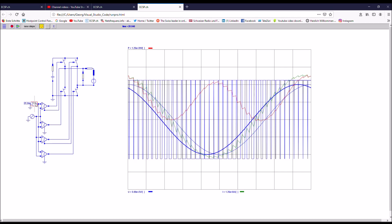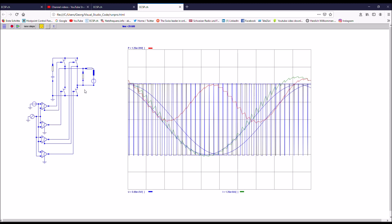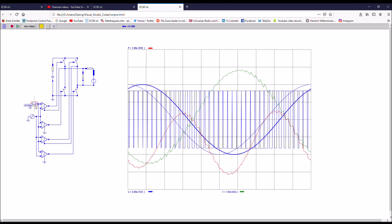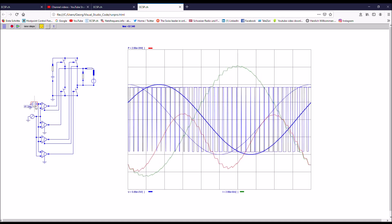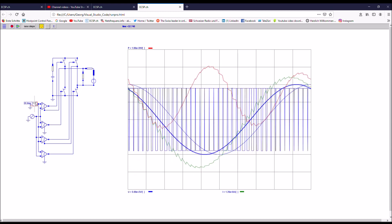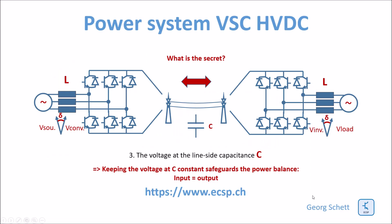The key part of the secret is the phase angle between the AC source and the converter output curve — this controls the power. You can see power is either on the negative side or moves to the positive side depending on the lead or lag phase angle. By keeping the voltage across capacitance C constant, you guarantee that as much power is fed into the DC part as is taken away from the DC part to the load. If load power exceeds source power the DC voltage decreases; if too much power is fed into the DC side, the voltage increases. Controlling this voltage safeguards the power balance.